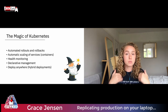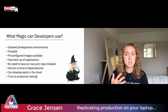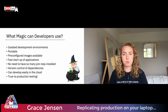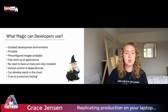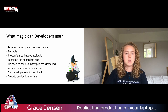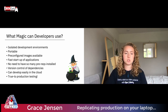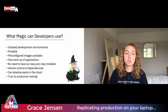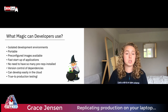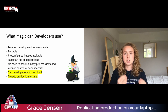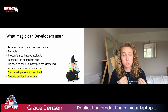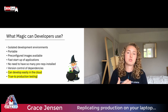So what magic can we as developers actually use from this? It allows us to have isolated development environments. Portability is a huge one — being able to port between various environments depending on the development stage. We can use pre-configured images, which saves time as developers and enables really fast startup. We don't need as many prerequisites installed on our local machines. Most importantly for this presentation: containers and tools like Kubernetes allow us to easily develop for cloud infrastructure and enable true-to-production testing.